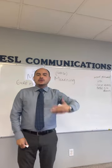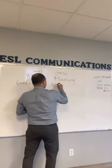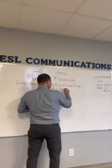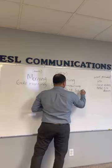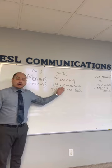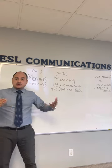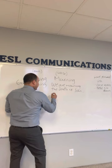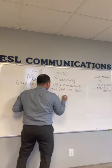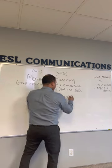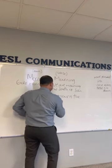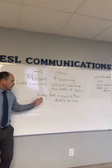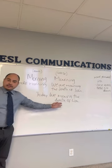¿Cómo decimos estamos de luto por la muerte de esta persona? We are mourning the death of John. Estamos de luto por la muerte de John. We can also say: today, we mourn the death of Lisa.